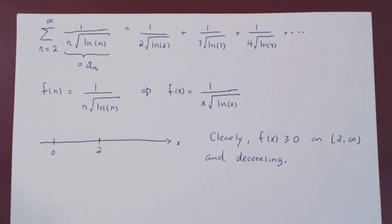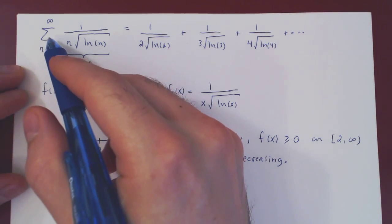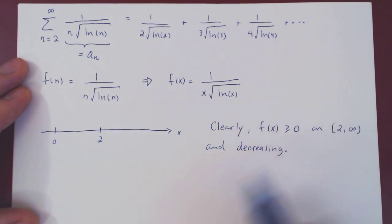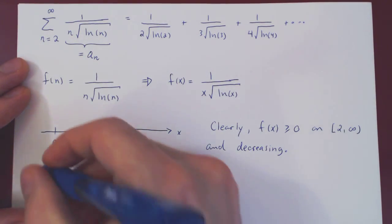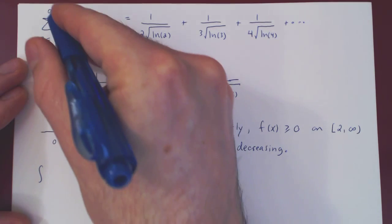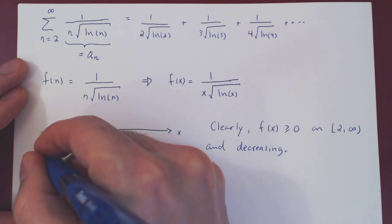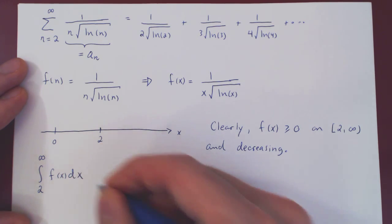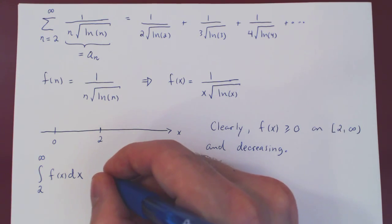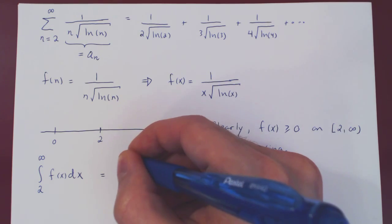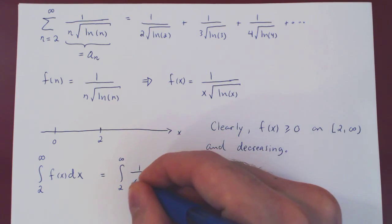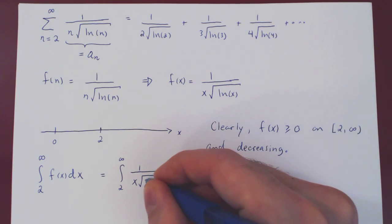And now we can apply the integral test, which says that you can compare the infinite series to the improper integral. So here we will ignore this and look at the integral from 2 to infinity of f of x dx. This is the integral from 2 to infinity. f of x is 1 over x root of ln of x dx.